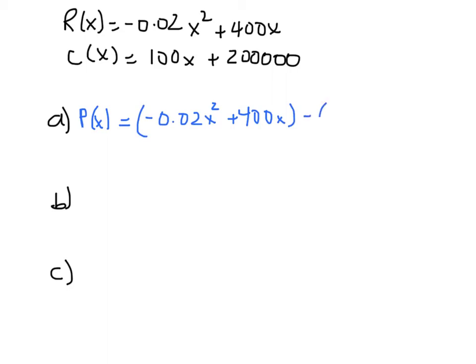Because this negative sign right here is going to distribute to all the terms in the cost function, and then we can combine like terms. But I wanted to include these parentheses so that you understand we're taking the revenue function and subtracting the cost function. That subtraction may include distributing the negative to several terms, in this case two terms, and then we can combine like terms.